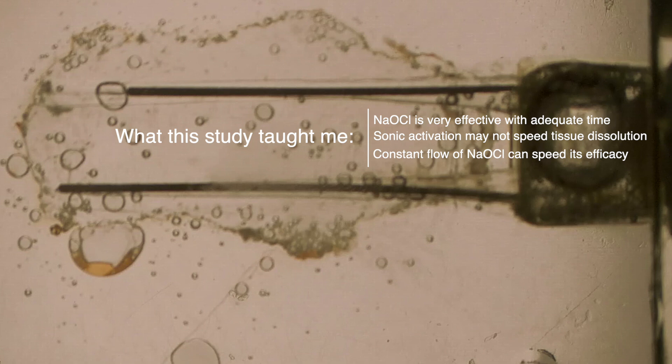The final thing that I found was that, and I've read this, but I never really understood it. I never twigged to it on a deep level, was that constant flow of sodium hypochlorite can speed its efficacy. And we saw that with the constant negative pressure irrigation, constantly delivering hypochlorite to the pulp chamber as the irrigation process goes on.